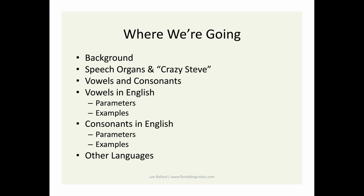This Florida Linguistics Association Intro Guide is a multi-part mini-survey course. We'll start with where phonetics and phonology fall within the discipline of linguistics as a whole. Then we'll continue with information about human speech organs and what apparatus people have to make language sounds. I'll introduce you to my friend Crazy Steve, who is crazy enough to allow me to make x-ray pictures of his speech organs. We'll talk about vowels and consonants next, giving examples of each in English, how they vary from each other, and show you the phonetic symbols from the IPA, or the International Phonetic Alphabet, used to represent them. Finally, we'll conclude with some fun facts from other languages.